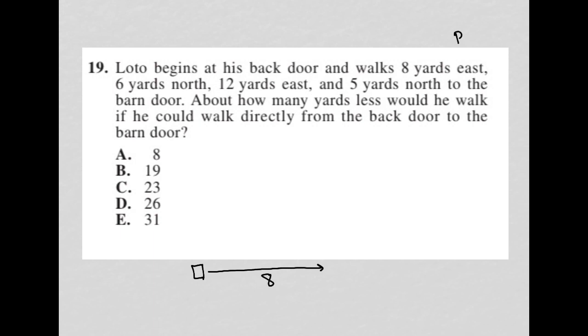This strategy is called plug-in picture, which means if a question describes anything that can be drawn, we should draw it. So there's our eight yards east, then he goes six yards north. Let's draw that in. So that's six, then 12 yards east. That's 12, and five yards north to the barn door. So we have another door there.